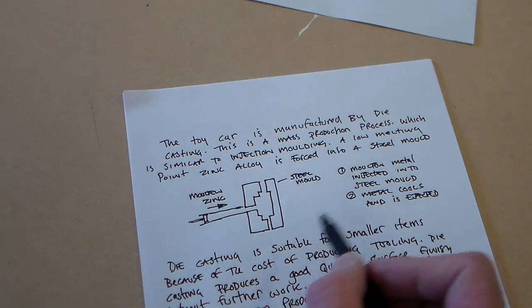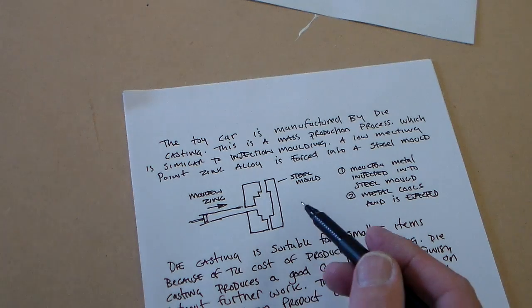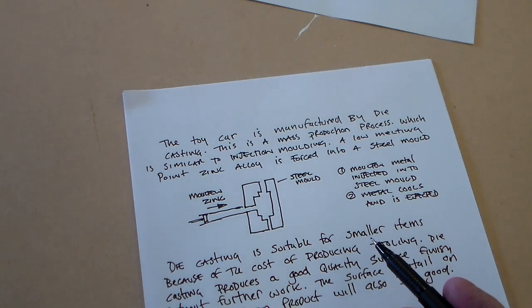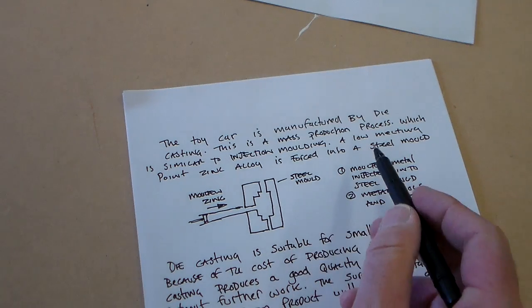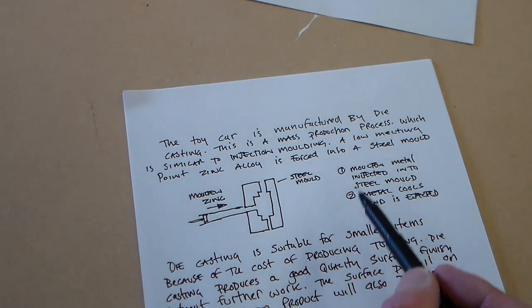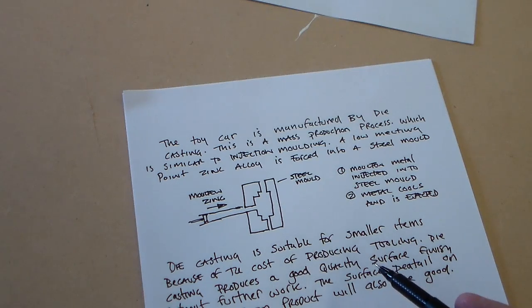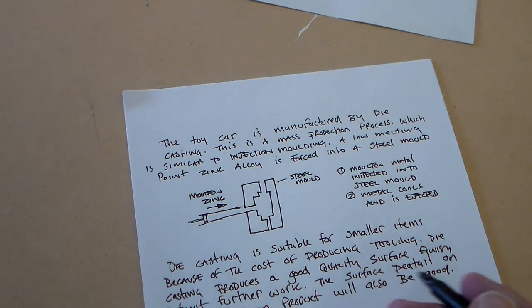We've described the main elements here. As I say, you could elaborate on these things but I think this would probably get you into the 8 to 10 marks. We've talked about the zinc saying that it's a zinc alloy. We said a good surface finish. We said that it's a mass production process. We've correctly named the die casting. We've said that it's similar to injection molding. We've used diagrams. We've said that it's suitable for the toy car. So I think we're up into the 8 to 10. I think if you'd just elaborated a little bit more to get the full 10 marks. But there's an answer that's going to get you into the 8 to 10 marks band.